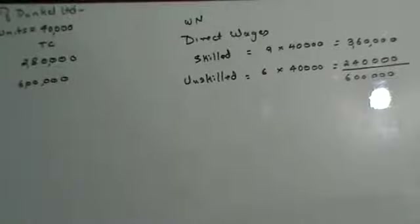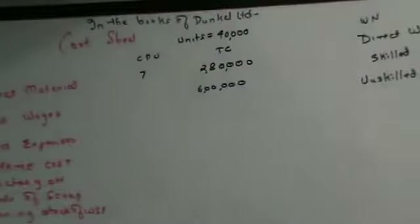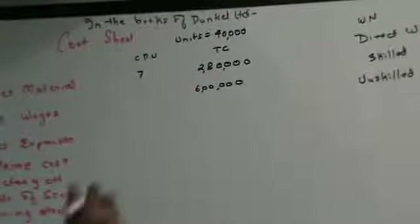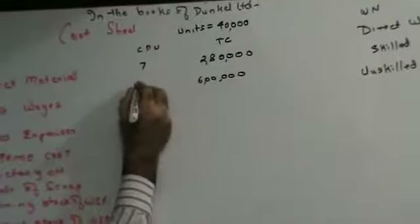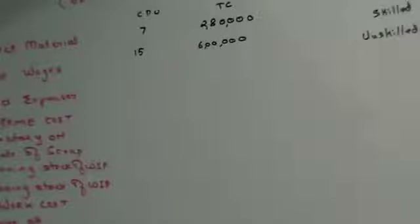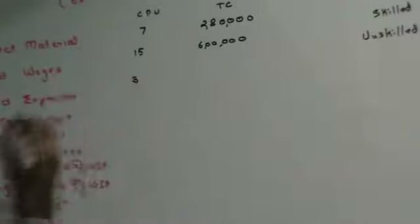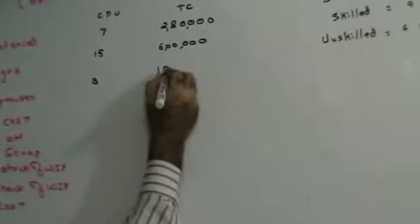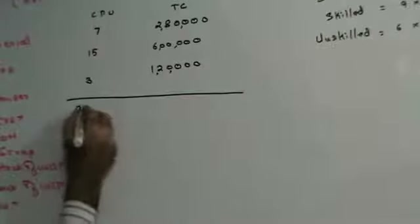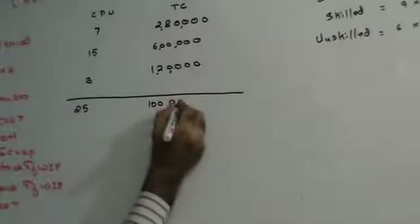Once I have direct wages as 6 lakhs (TC), I can find CPU by dividing TC by number of units: 6 lakhs divided by 40,000. Next, royalty on raw material consumed is 3 rupees per unit — royalty is a direct expense. So 3 into 40,000 is 1,20,000, giving a CPU of 25 and PC of 1,00,000 (i.e., 25 into 40,000 equals 10,00,000).